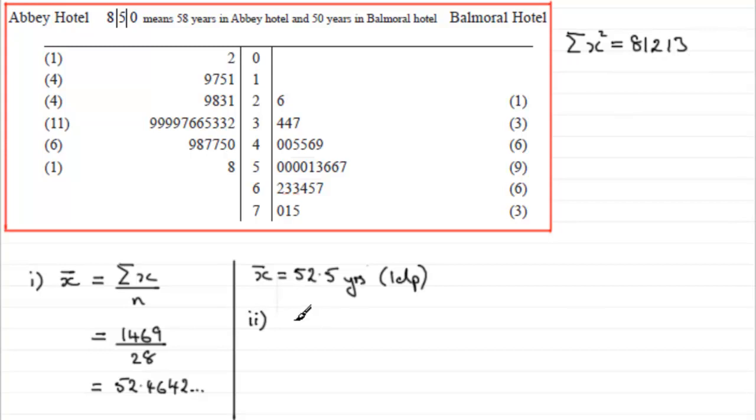Because we should know that to work out the standard deviation of a set of data like this, we need to do the square root of the sum of the squares of our values divided by how many we've got minus the mean, which in this case is x-bar squared. So that's the formula that we would need to use.